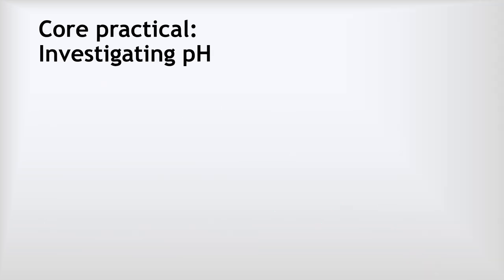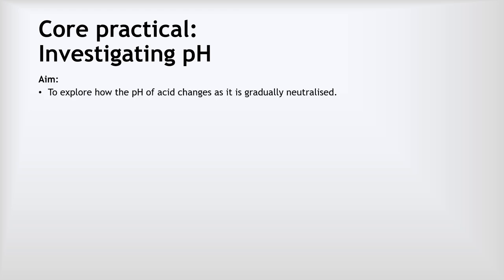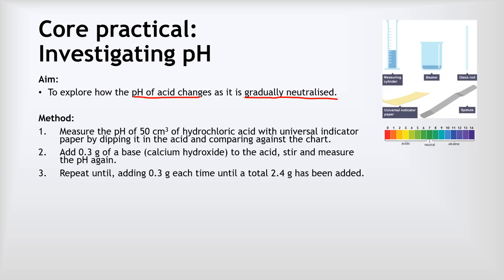Now the investigating pH core practical. The aim was to investigate how the pH of an acid changes as it is gradually neutralised. We had 50 cm³ of hydrochloric acid and measured the initial pH using universal indicator paper, comparing the colour against a colour chart — not the most accurate method but good enough for comparisons. We then added 0.3 g of calcium hydroxide, stirred until dissolved, measured the pH again, and repeated this until a total of 2.4 g of base had been added.